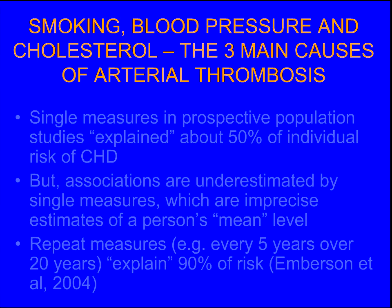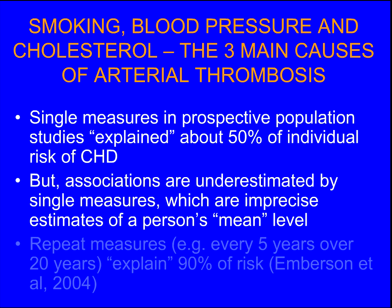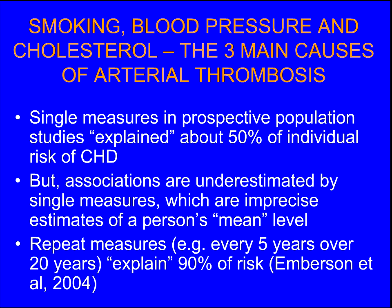So why do we think smoking, blood pressure, and cholesterol are the three main causes of arterial thrombosis? There was doubt about this perhaps 10 to 20 years ago, because in epidemiological studies, if you just measure these variables once and follow them up, you only explain about 50% of individual differences in risk of coronary heart disease. But the problem is that one measurement of cholesterol or blood pressure is a very imprecise estimate of a person's mean level across their lifespan. So if you do what John Emberson did in the British Regional Heart Study — measuring risk factors every five years over a 20-year period — you can explain 90% of the inter-individual risk.